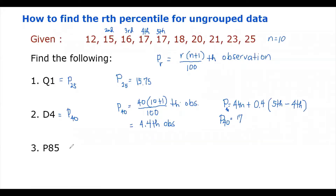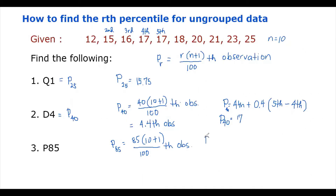The third problem asks us to find P sub 85. Using the formula: P sub 85 equals 85 times (10 plus 1) over 100, which is 85 times 11 over 100.